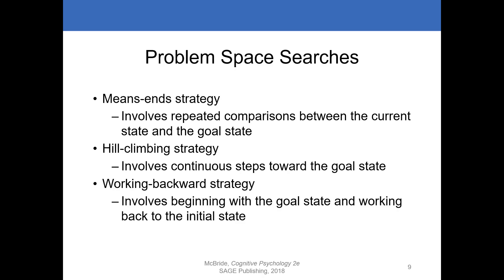Other strategies include the means-end strategy, which involves repeated comparisons between the current state and the goal state — think of a GPS that figures out where you are and keeps moving you along the path toward your destination. The hill-climbing strategy involves continuous steps and adjustments toward the goal. The working-backwards strategy begins with the goal state and works backwards to where you currently are. Which strategy you use depends on your goal and your problem, and not all strategies work for every problem.